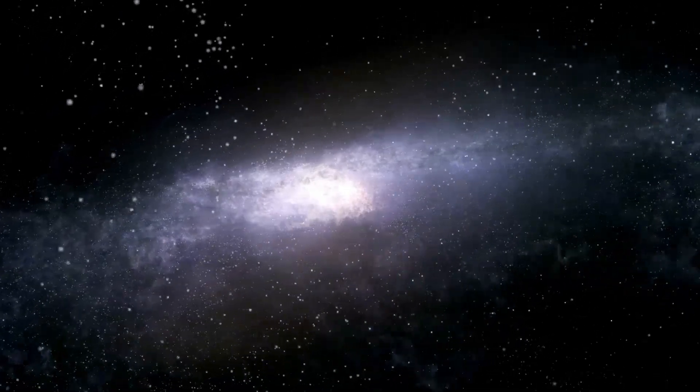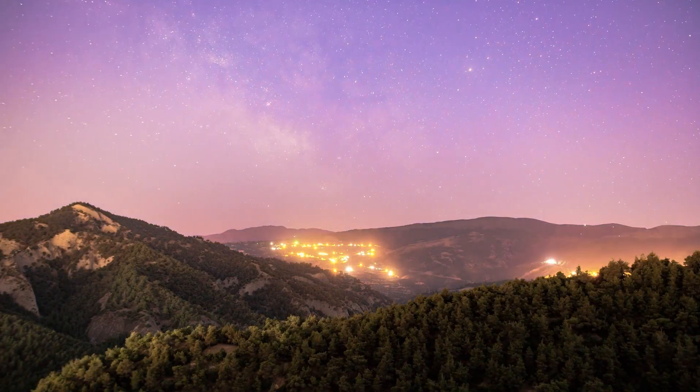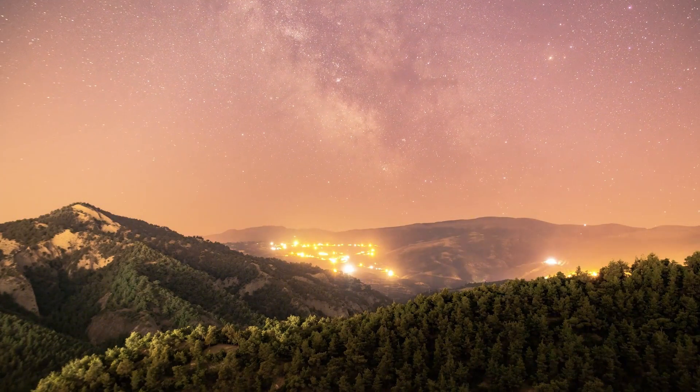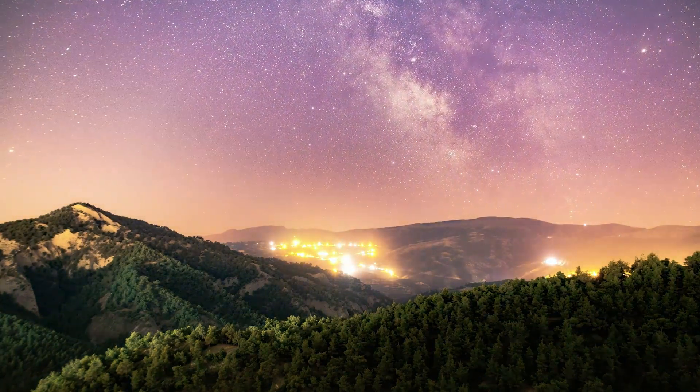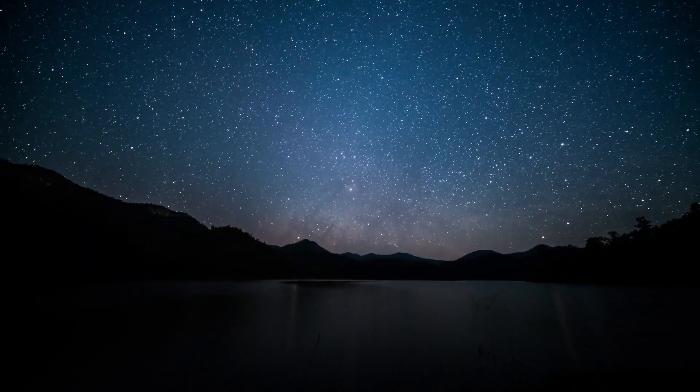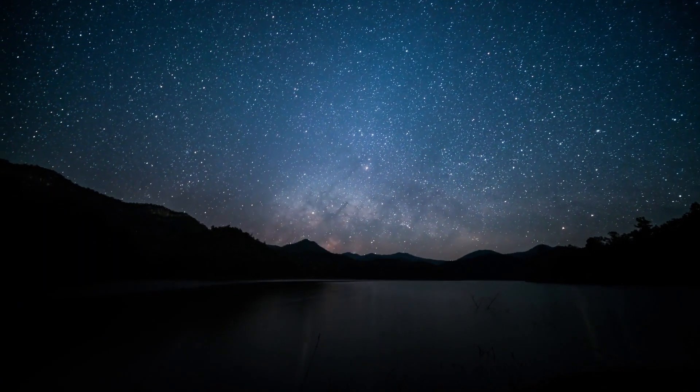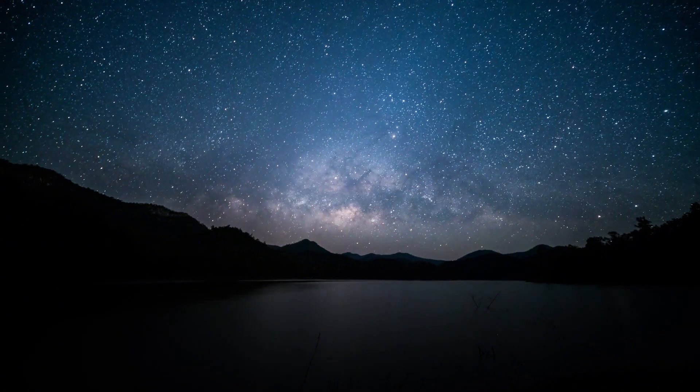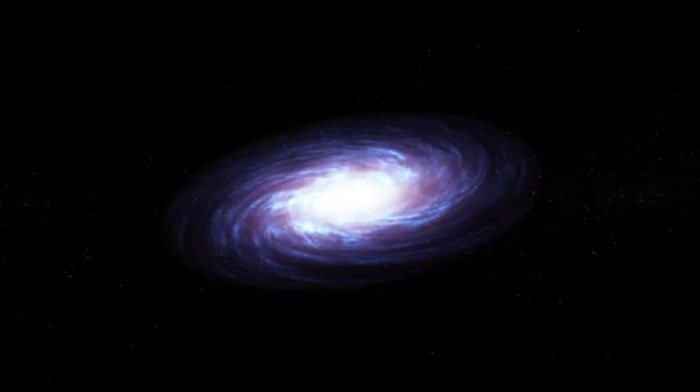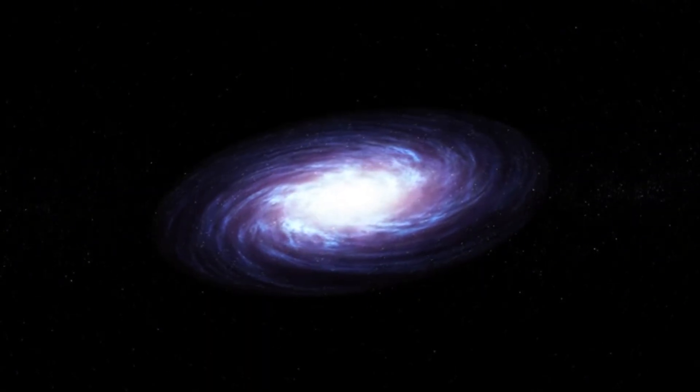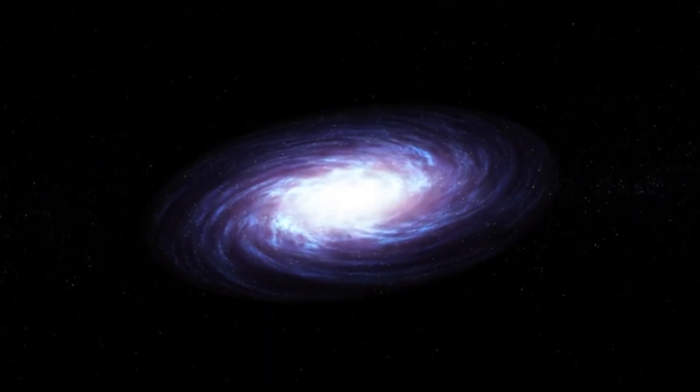General relativity introduces the idea of black holes, which are regions where gravity is super intense. Inside a black hole, the gravitational force is so powerful that nothing, not even light, can escape from it. The edge surrounding a black hole is called the event horizon, and it's like a point of no return. Once something crosses this boundary, it gets pulled into the black hole without any chance of returning.